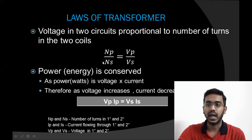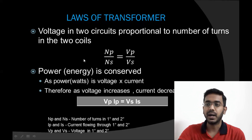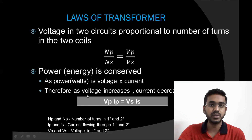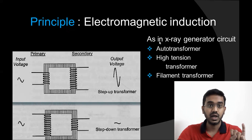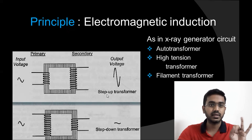The equation for this law is Np/Ns = Vp/Vs. The second law is that power is conserved — power means voltage multiplied by current. If we want voltage to be increased, the current will be decreased proportionally; they are inversely related. The principle of a transformer is electromagnetic induction. The types of transformers used in the X-ray generator circuit are: first, auto transformer; second, high tension transformer, which is a step-up transformer; and third, filament transformer, which is a step-down transformer.